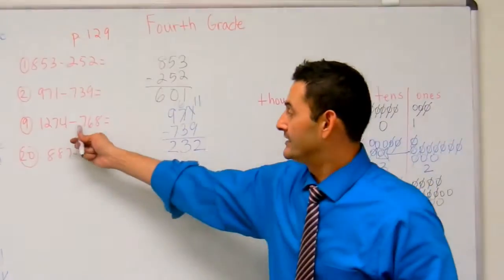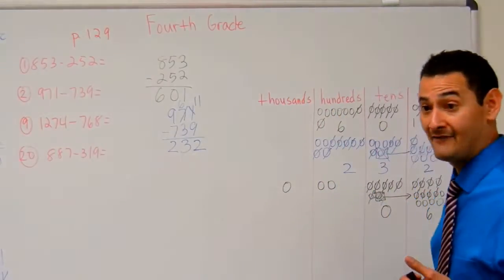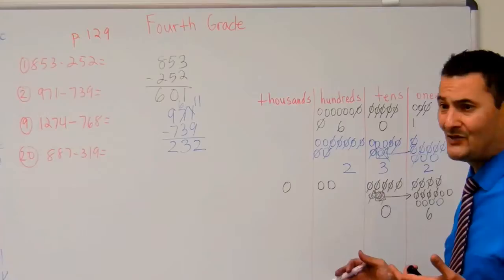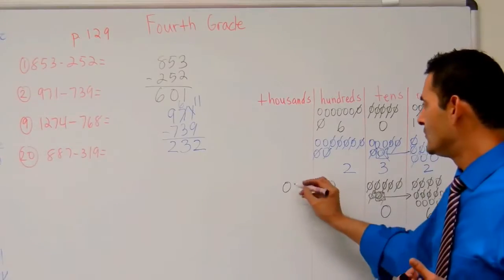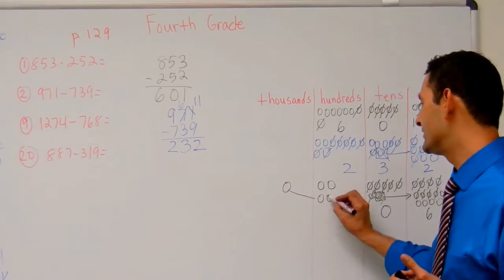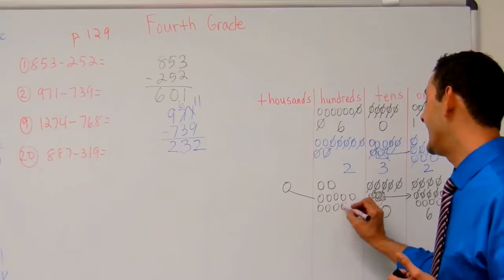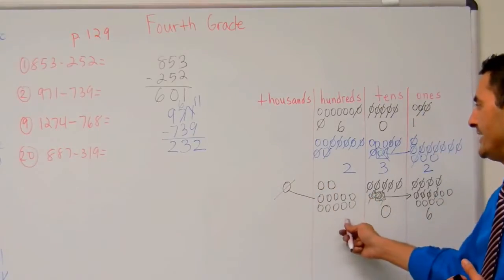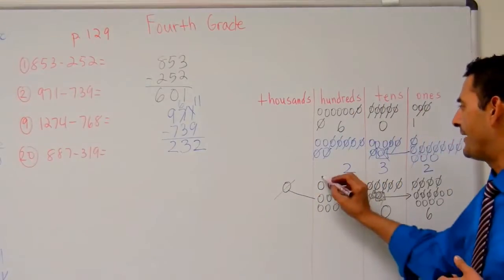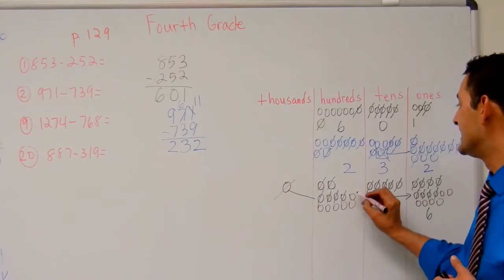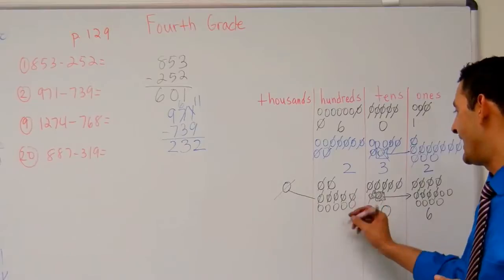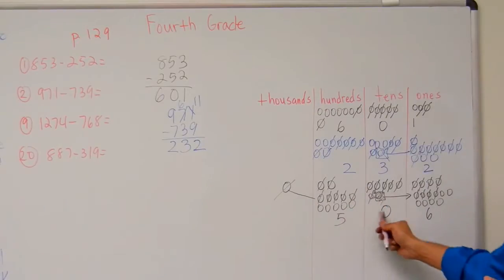Now let's look at the hundreds place. It says to take away seven. I've got two hundreds — I can't do that. I'm going to have to borrow ten hundreds from the thousands place — one through ten. Get rid of that one thousand. So now I take away seven hundreds — one through seven. How many hundreds do I have left? One, two, three, four, five. So the answer is going to be five hundreds, six — 506.